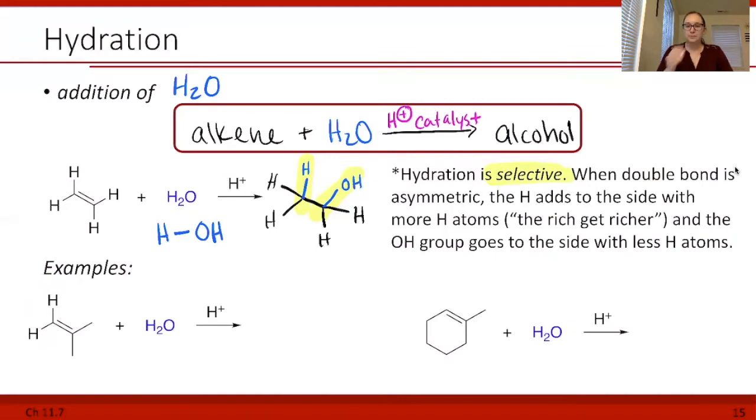The hydrogen adds to the side with more hydrogen atoms. Think about having hydrogen as being rich, like having money. The side that has more hydrogens is going to get the hydrogen, and the side that has less hydrogens is going to get the OH, the alcohol. How to remember this is the rich get richer if hydrogen is the money.